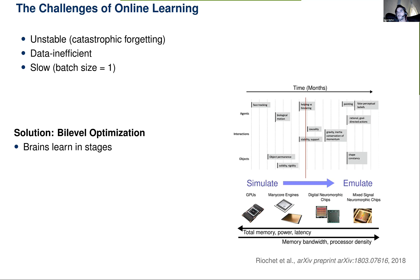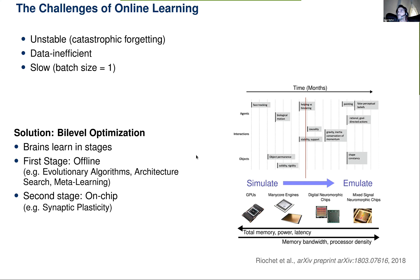A very appealing approach to solve this is bi-level or multi-level optimization. Rather than learning from scratch, we start from a pre-trained model and fine-tune. The brain similarly learns in stages — as you can appreciate from infant development. We'd like to reproduce this workflow in neuromorphic engineering: pre-train the network in simulation so it can learn efficiently in the real world, bypassing at least some of these challenges.